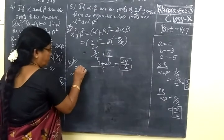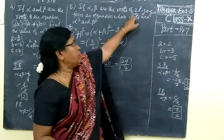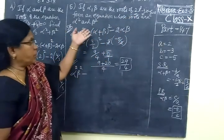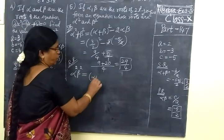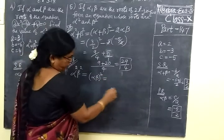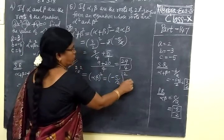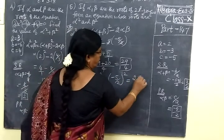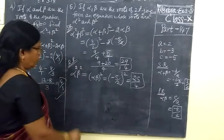Product is alpha square beta square. Alpha beta is the given roots. For the new equation with roots alpha square beta square, it will be alpha beta whole square. So this is equal to alpha beta minus 5 by 2 whole square. Square of minus 5 by 2 is plus 25 by 4.